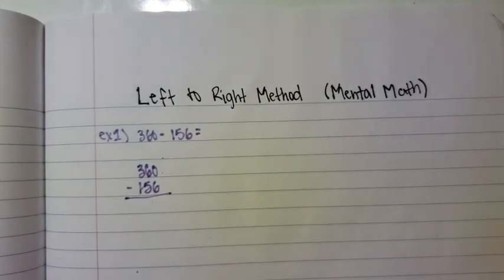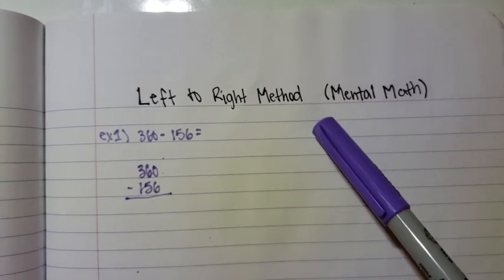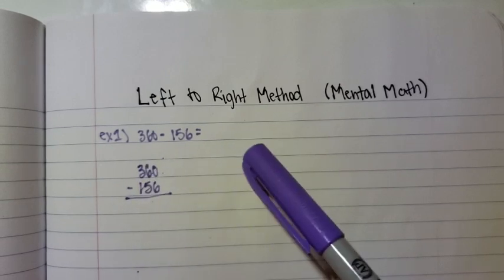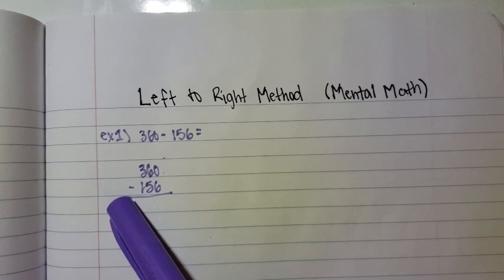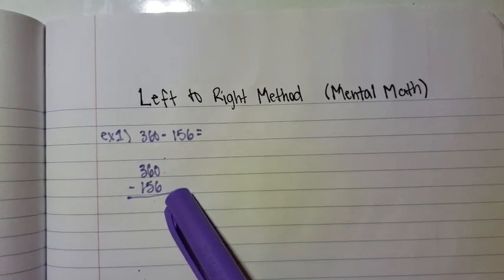Now the difference for the left-to-right method compared to the right-to-left: with the left-to-right method, we're going to start from over here from the hundreds place. With the right-to-left method, we started with the ones place.